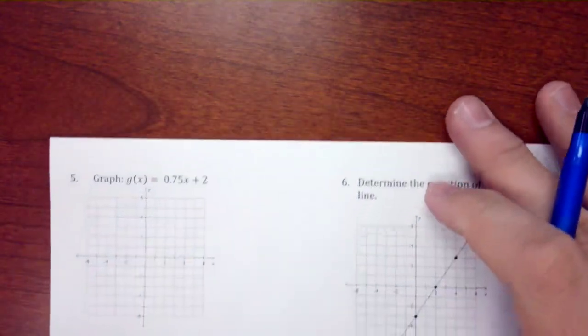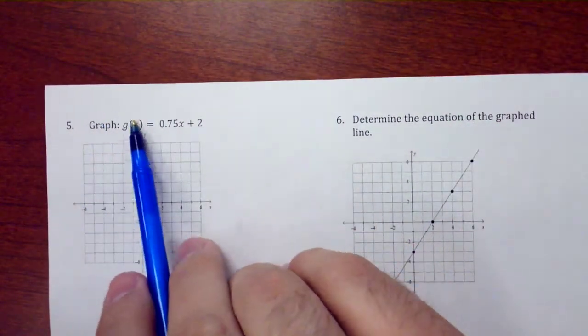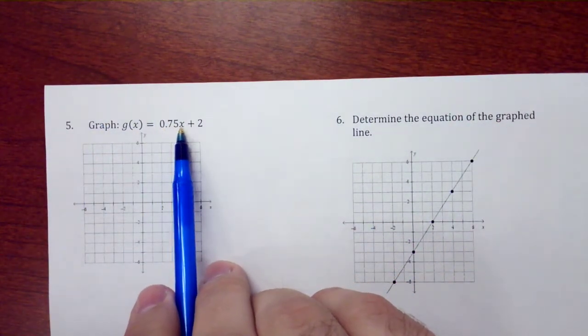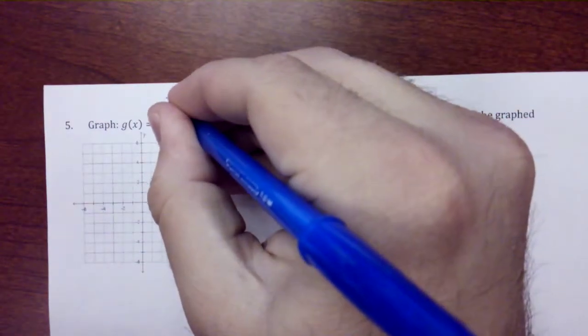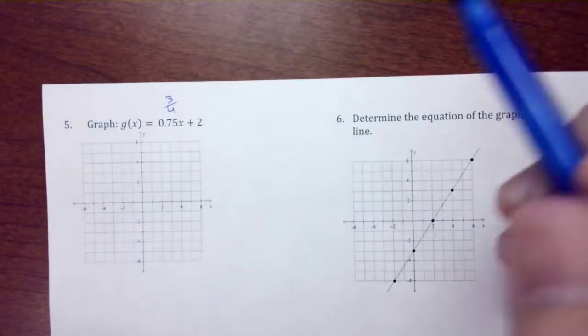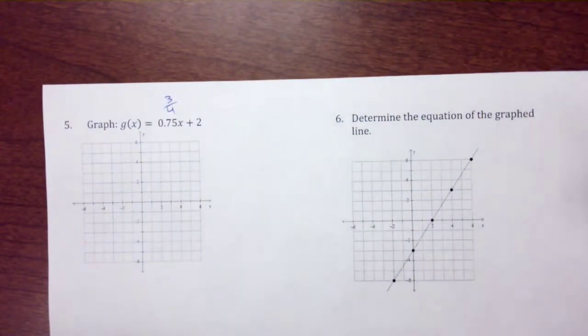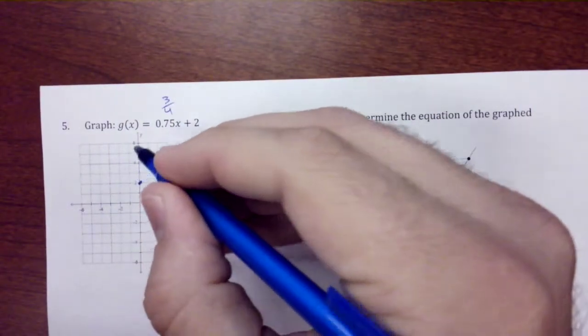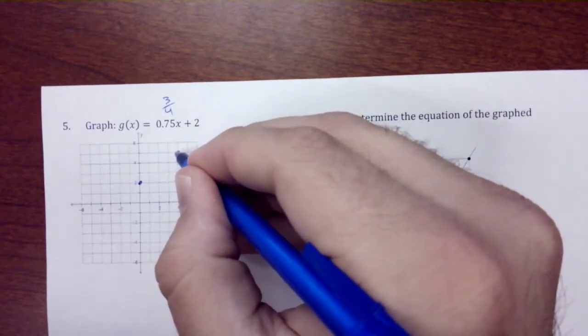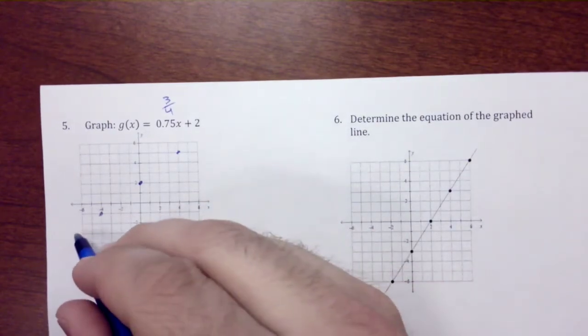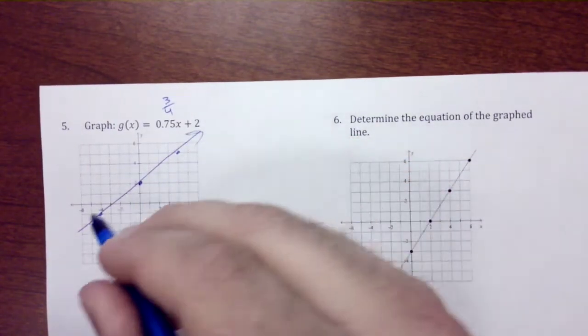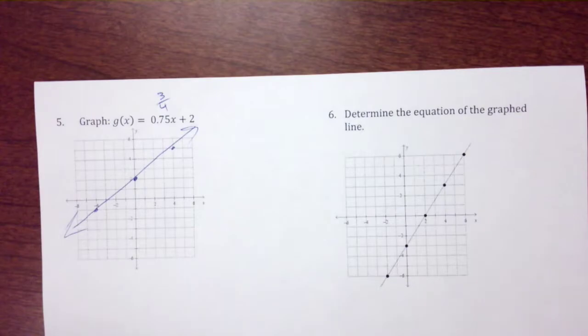We're going to graph this function, so g(x) = 0.75x + 2. This might look easier if it was 3/4x. We're going to go to positive 2, we're going to go up 3 over 4. We have a line, so we can go something like that. Pretty easy.